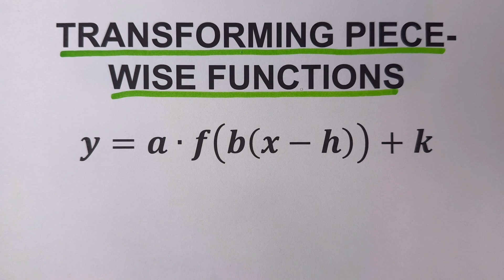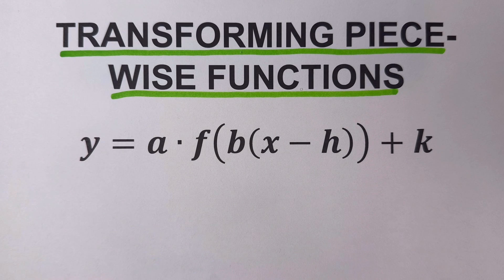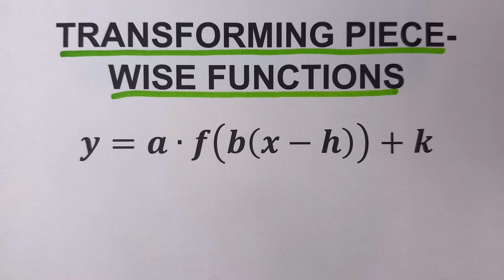If y equals f of x is a function, then the equation in graphing form for transformations of this function can be written as y equals a·f(b(x minus h)) plus k, where a, b, h, and k are parameters.